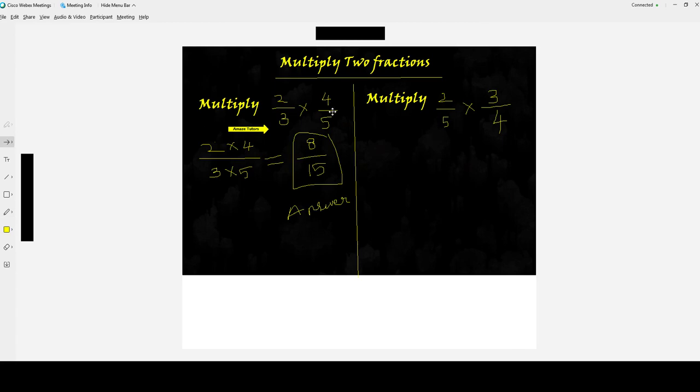Let's look at one more example: 2 fifths times 3 fourths. Usual steps. Multiply the top numbers. Multiply the bottom numbers. 2 threes are 6, 5 fours are 20. But is this the final answer students? No, because we do have common factor between 6 and 20. In other words, both of them are divisible by 2. Now 6 divided by 2 is...